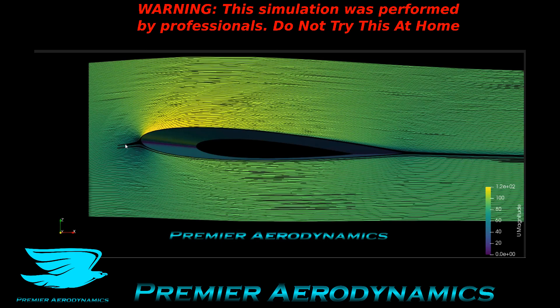At the front you can see the way the streamlines hit — the streamlines that go over the top section come from well below the leading edge point, because you have this low pressure pulling them up this way.